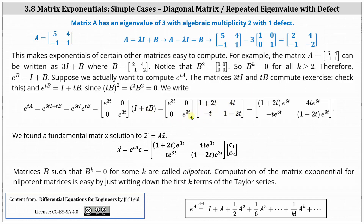And then finally, we multiply the two matrices, which gives us the two by two matrix with entries the quantity one plus two t times e to the three t, four t e to the three t, negative t e to the three t, and the quantity one minus two t times e to the three t. This is the matrix exponential for matrix A, which means this is a fundamental matrix solution to x prime equals ax. Therefore, the general solution is x equals e to the power of tA times the constant vector c.